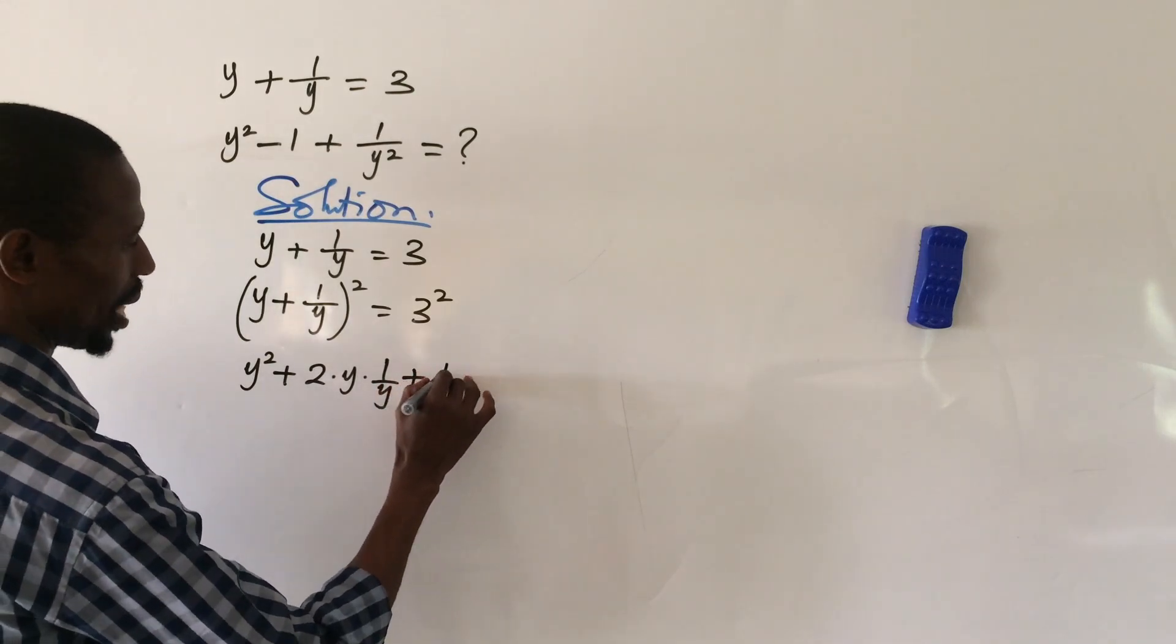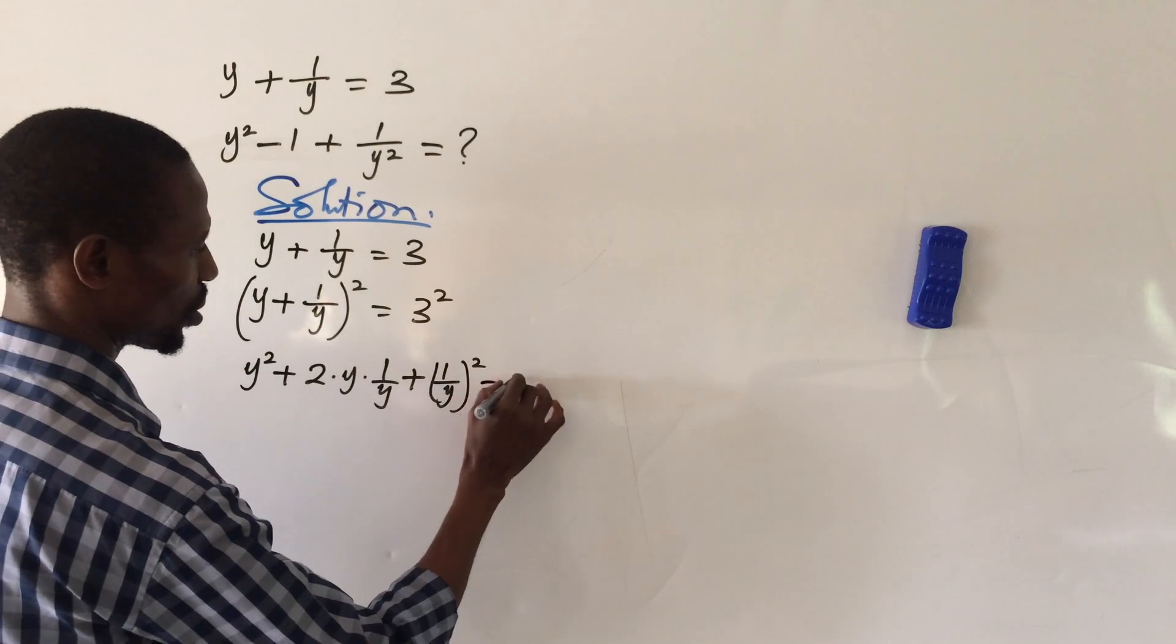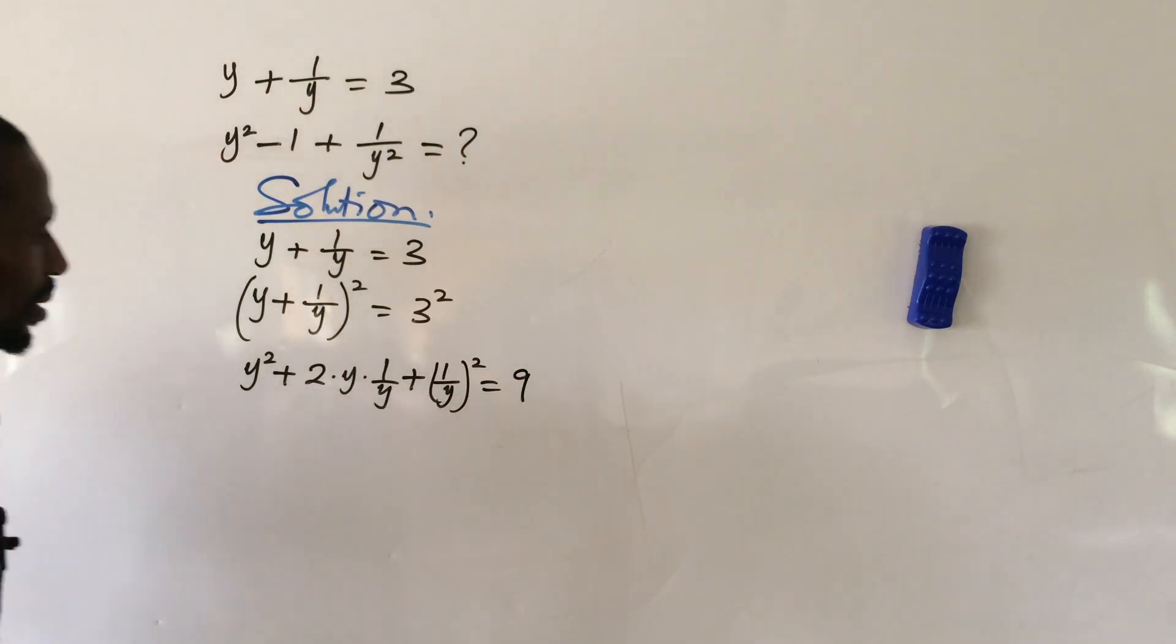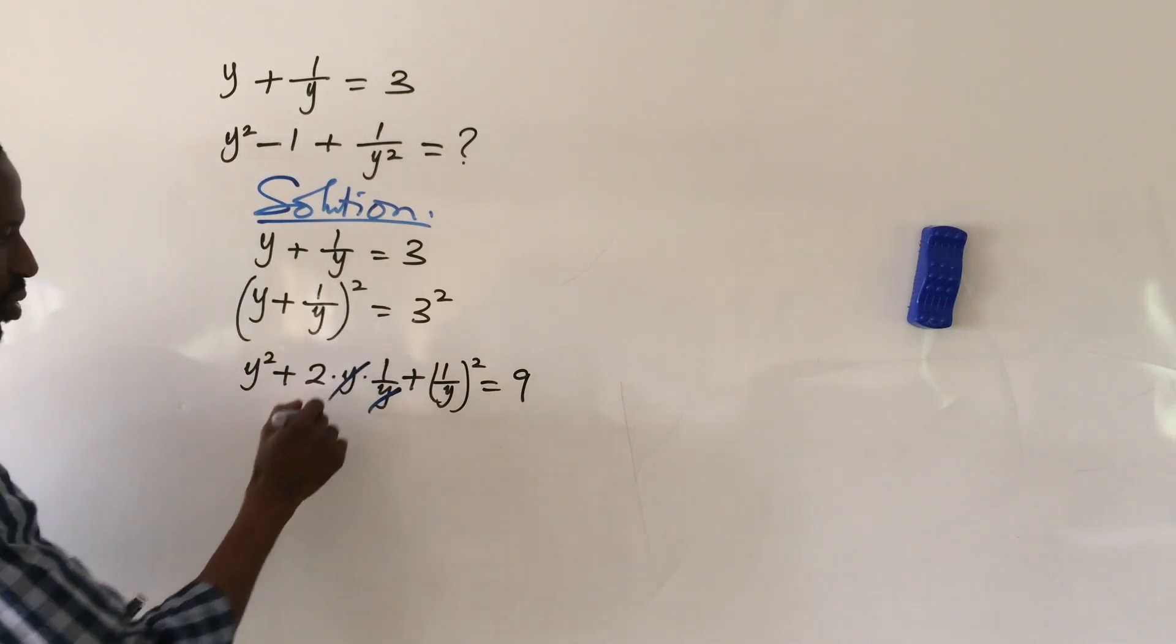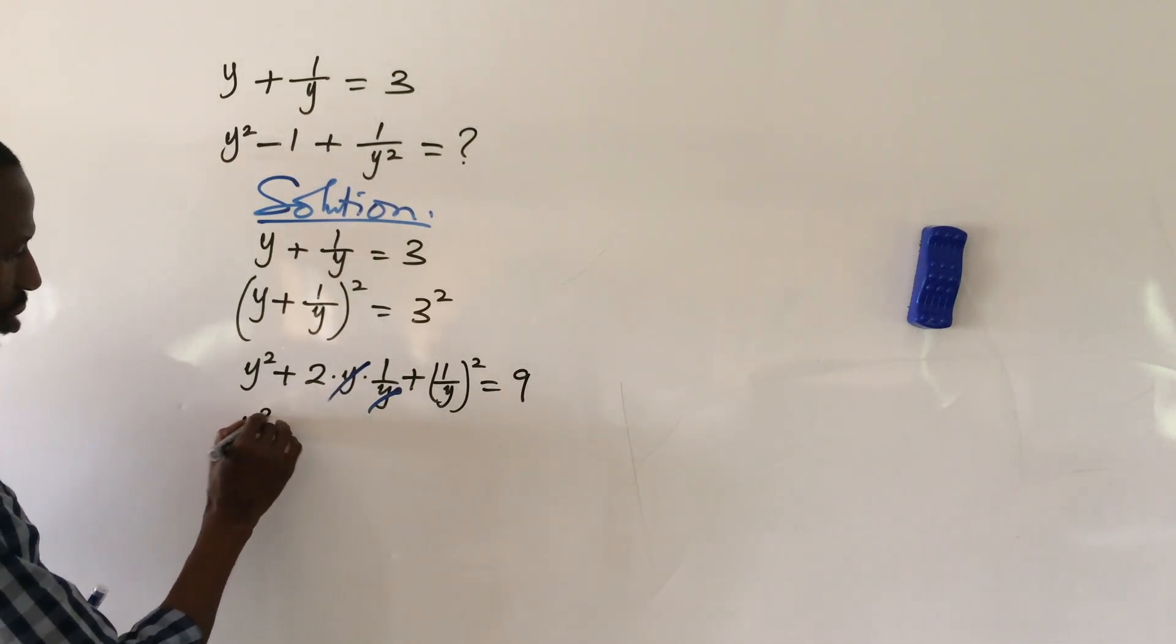Now if you look at this carefully, automatically this will go with this, and so here we are now left with y squared plus 2 plus 1 over y squared equals 9.